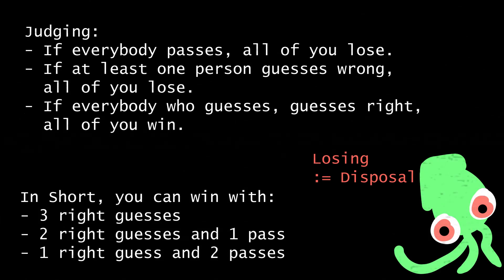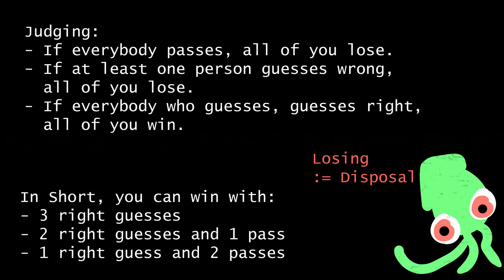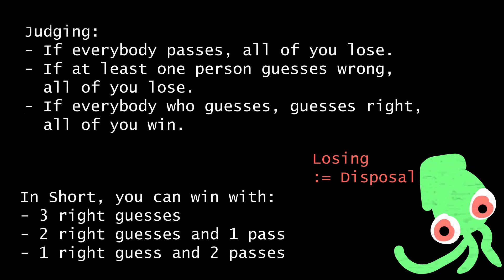Able has to guess the coin on the left. You have to guess the coin in the middle. And Tab has to guess the coin on the right. The game ends after all three people have made their guesses and entered room three. There, I will announce the results. If everybody passes, all of you lose. If at least one person guesses wrong, all of you also lose. If everybody who guesses gets it right, all of you win and earn the right to escape. That means you can win with three right guesses, two right guesses and one pass, or one right guess and two passes.